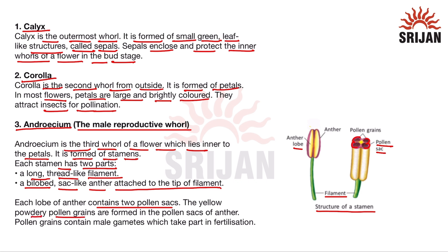Yellow powdery pollen grains are formed in the pollen sacs of the anther. These pollen grains contain male gametes which take part in fertilization.